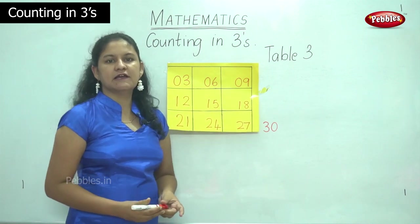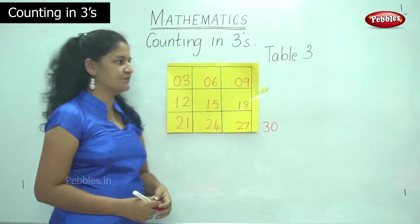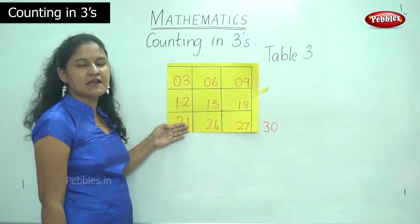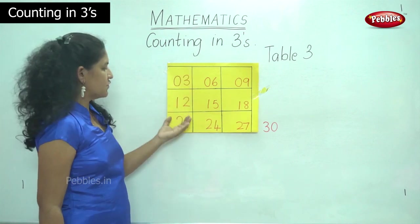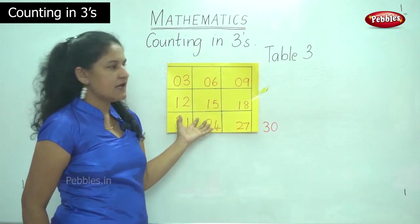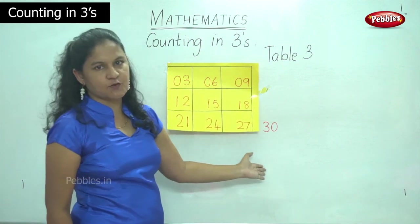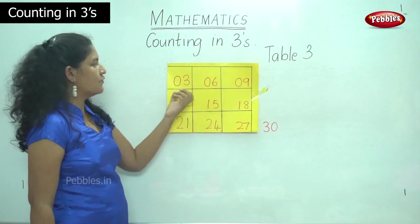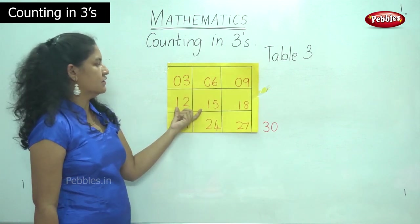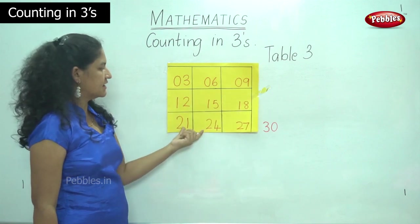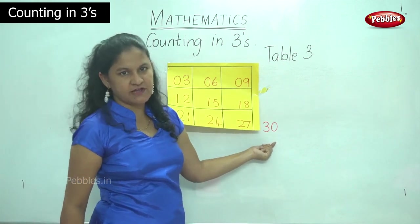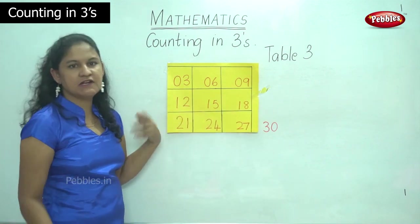So this is a simple method of learning table 3. We have a 3 by 3 box, and we start from the bottom most, writing numbers from 1 to 9 from bottom to top: 1, 2, 3, 4, 5, 6, 7, 8, 9. This is in the 1's place and on the outside we write 0. In the 10's place: first row gets 0, second row gets 1, last row gets 2, and at the side of 0 we write number 3. And we can verify our table 3.